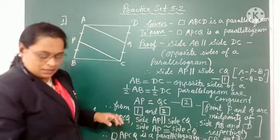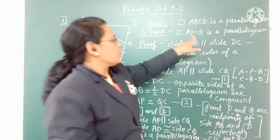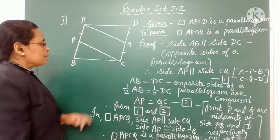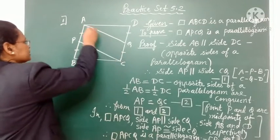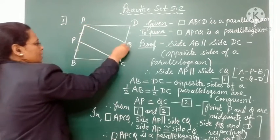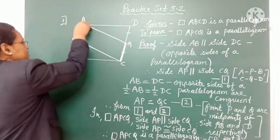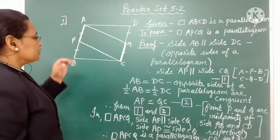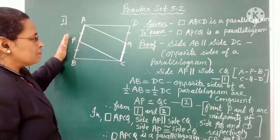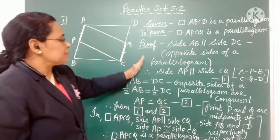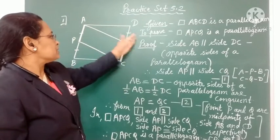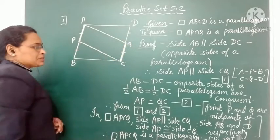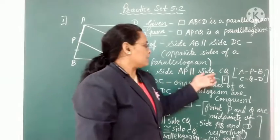Now our aim is to prove that quadrilateral APCQ is a parallelogram. One pair of opposite sides of this quadrilateral is AP and QC. We have to show that AP and QC are also parallel. From the given information of parallelogram ABCD, since AB is parallel to DC, we can prove that side AP is also parallel to side QC.